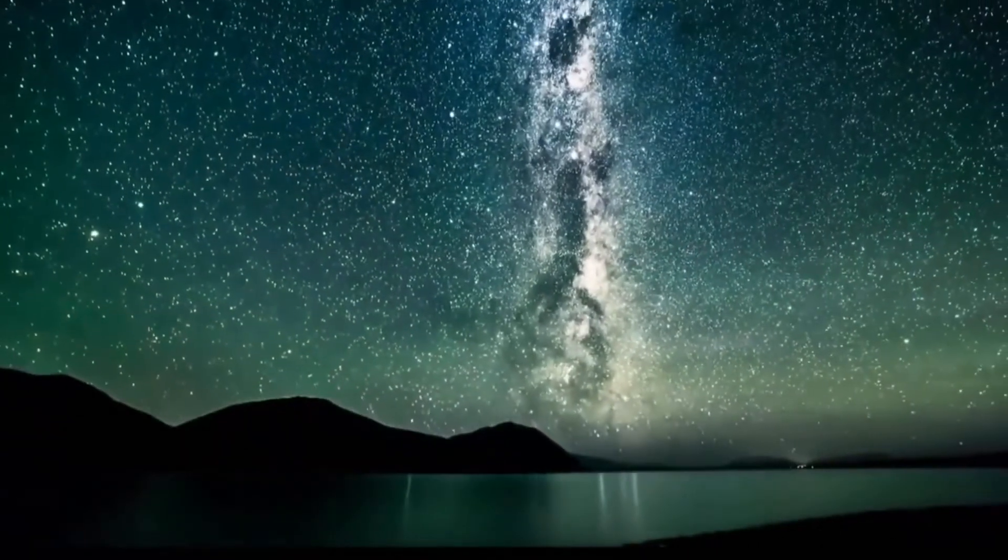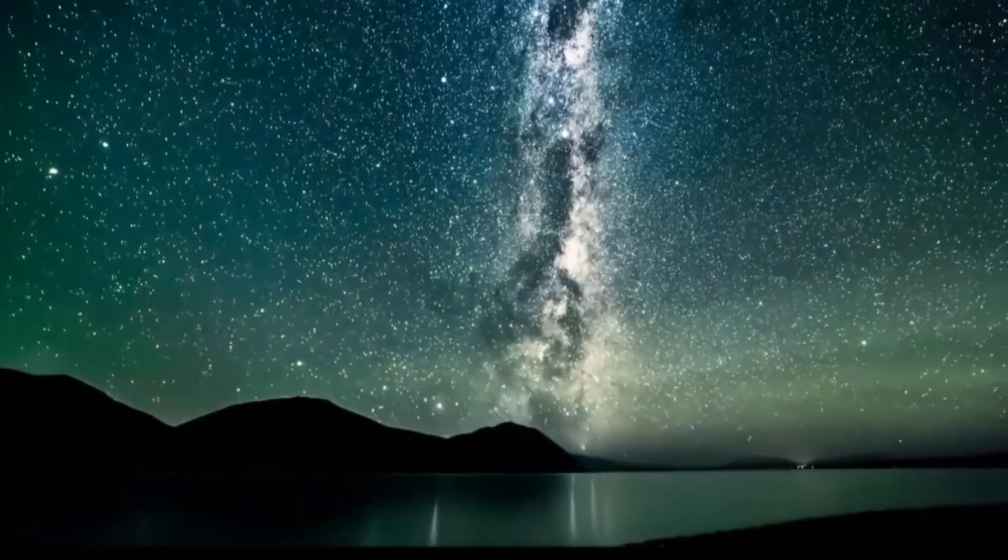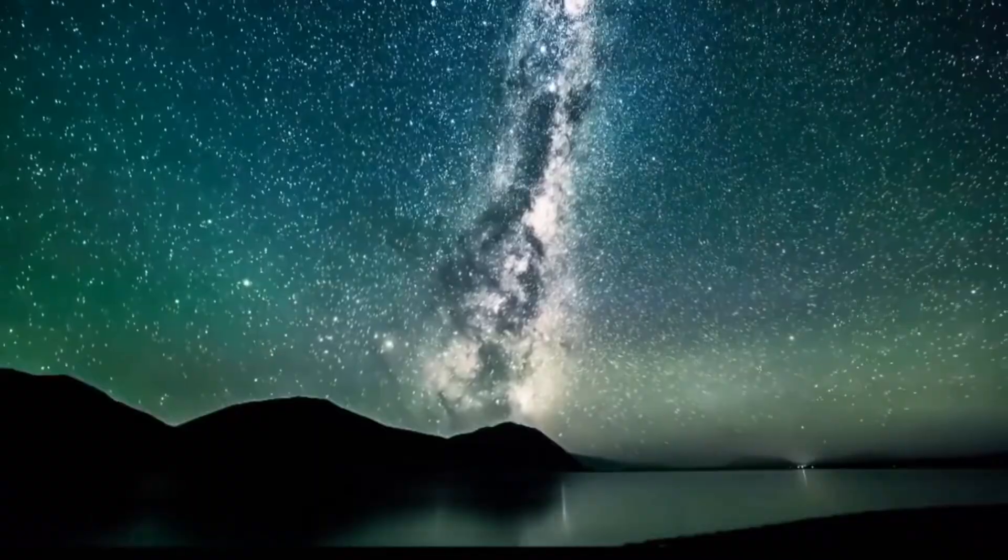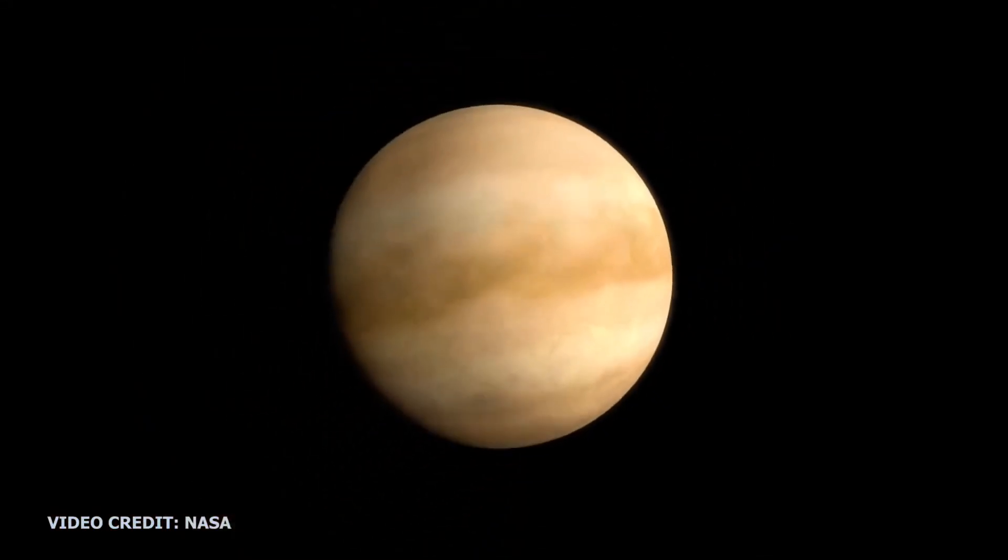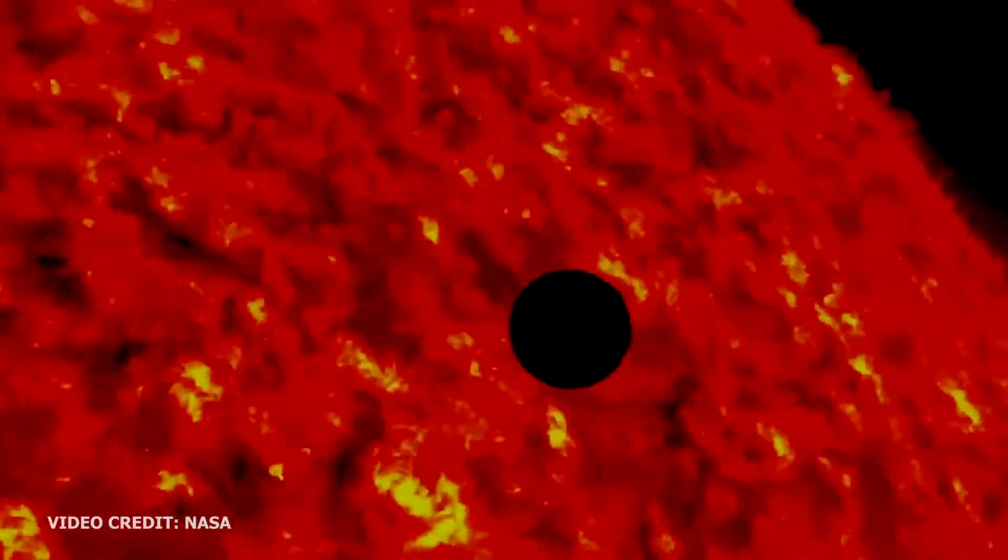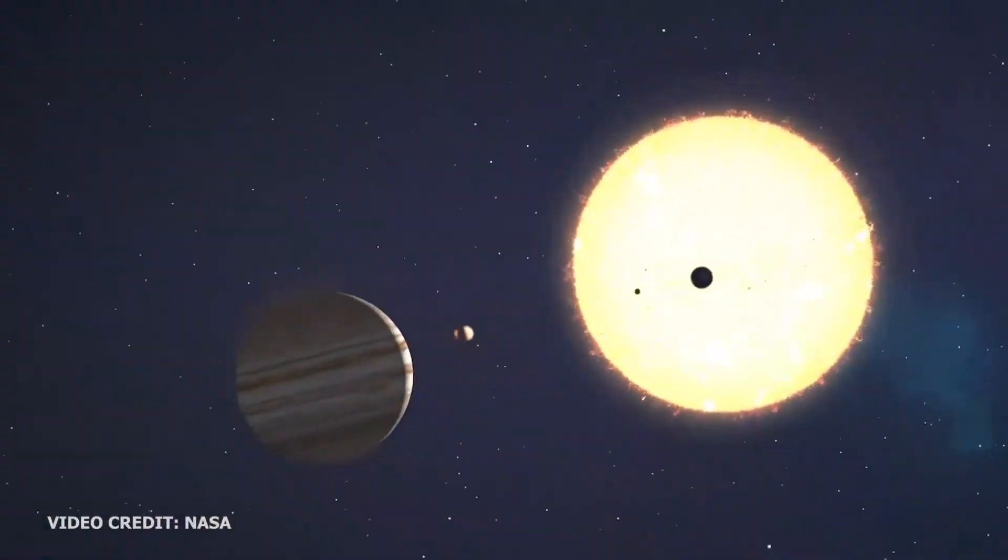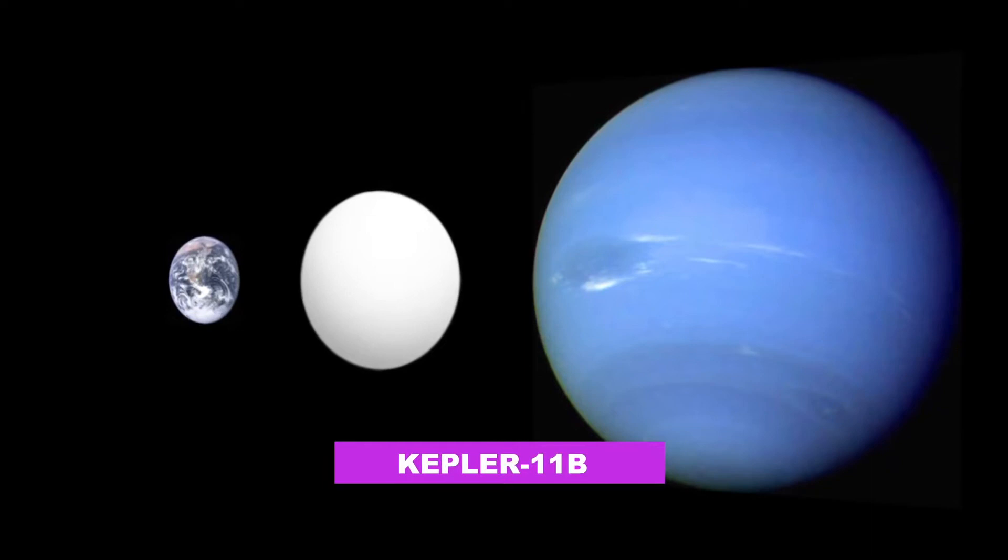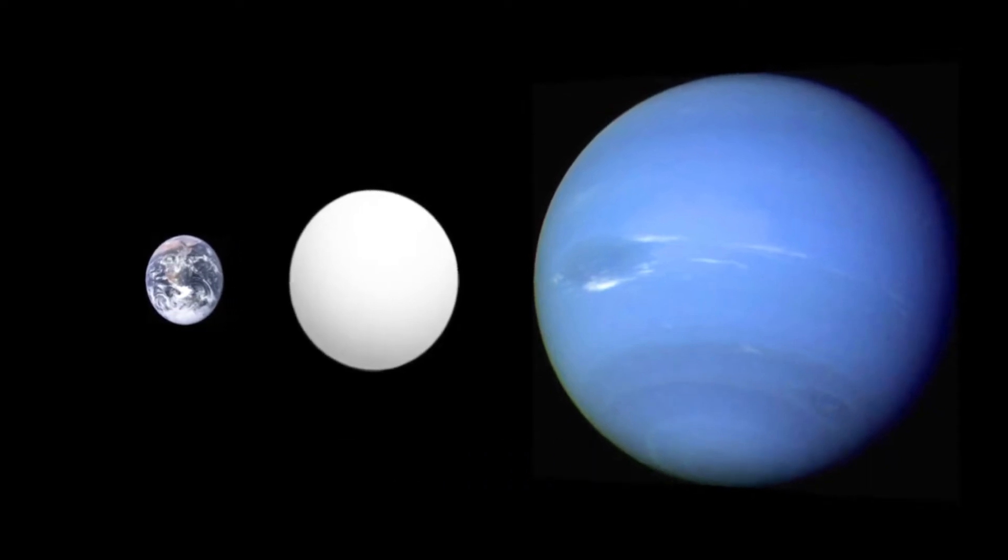Five of the new planets are closer to their parent star than Mercury is to the Sun. The sixth world lies farther out within a region that would fit within the orbit of Venus. Experts have said that it is the most closely packed planetary system that we know of yet. The innermost planet Kepler-11b is 10 times closer to its star than the Earth is to the Sun.